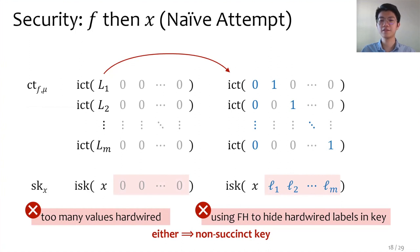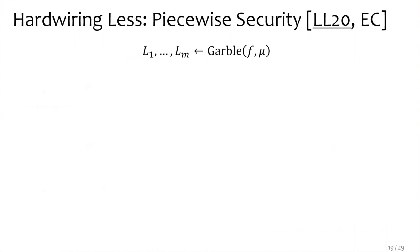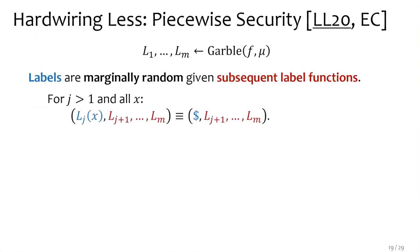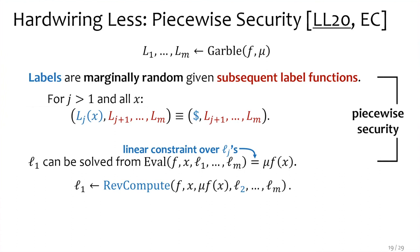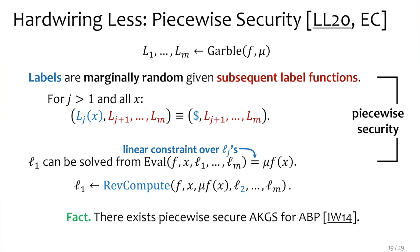Fortunately, both problems can be solved. For the problem of hardwiring too many values, we use a strong security notion for AKGS from our previous work called piecewise security. It has two requirements. First, each label except the first must be marginally random, even given all subsequent label functions (i.e., their coefficients). Second, the first label L_1 can be solved from the correctness equation, which is a linear constraint over the labels — there is an efficient reverse computation procedure, called RC, that finds L_1 given f and the other labels. These two properties together constitute piecewise security, and we know a piecewise-secure AKGS for arithmetic branching programs due to Ishai and Wadia.